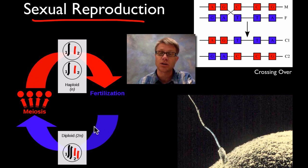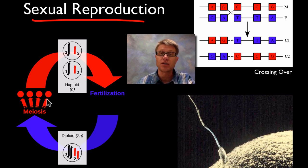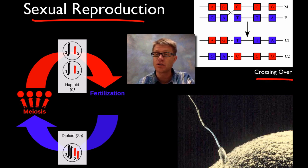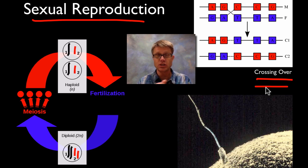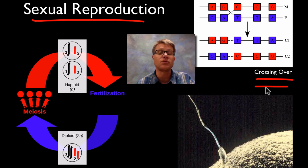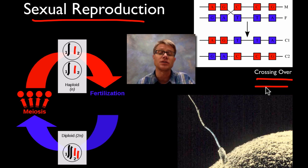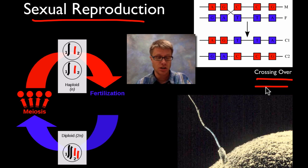Right here would be gametes, right here would be organisms. Meiosis gives us variation — in meiosis there's crossing over that occurs where you have the two chromosomes switching positions, so you're getting a new chromosome that's never been created before. We're making so many different gametes with so much variability that you get offspring totally different than the parents, which offers them protection in a changing environment.